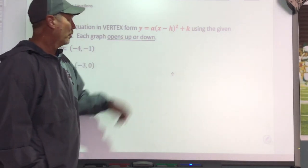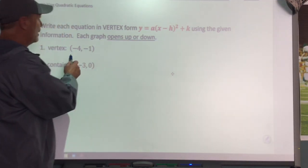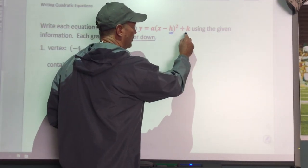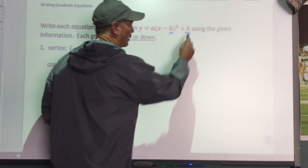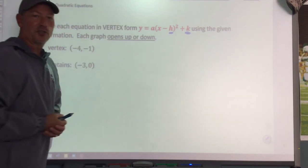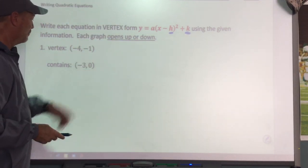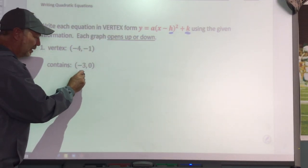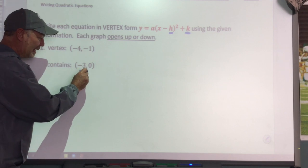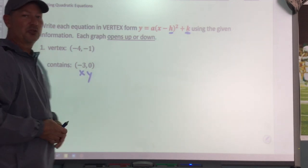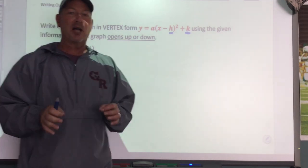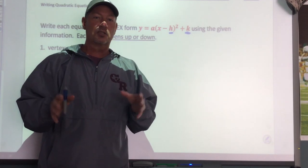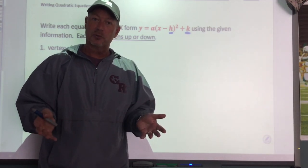Remember, if they give me the vertex, that's your vertex right here. They're going to give me a point. This point is going to be an x and a y value. So the only value that they're not going to give me — that we're going to solve for — is our a value.